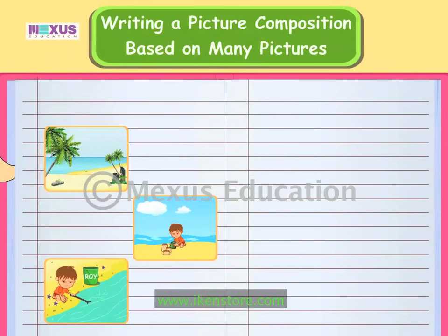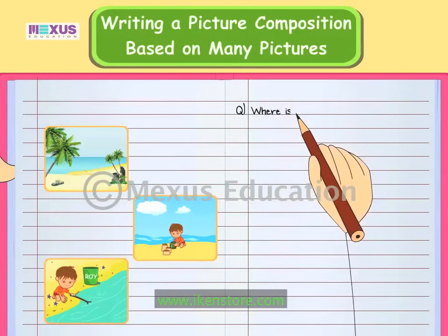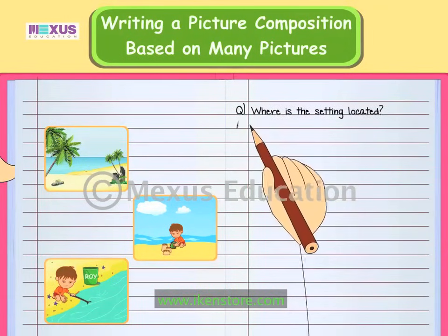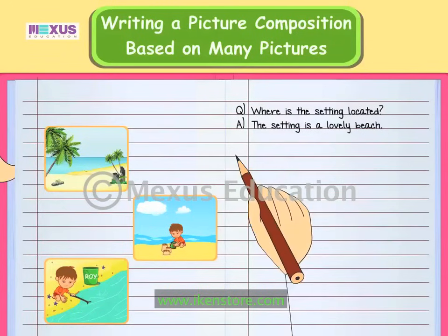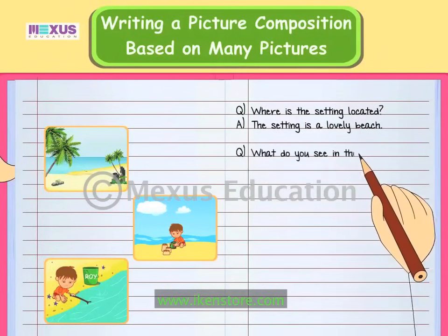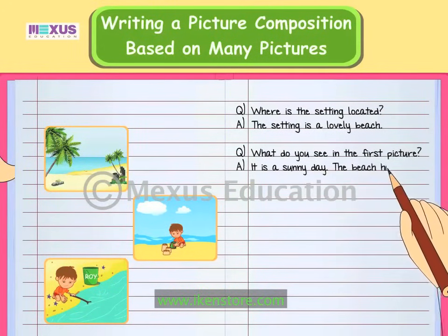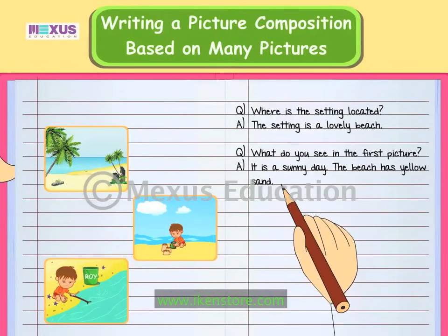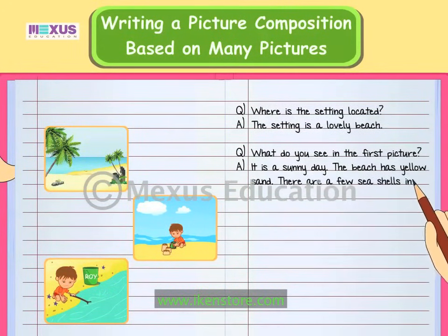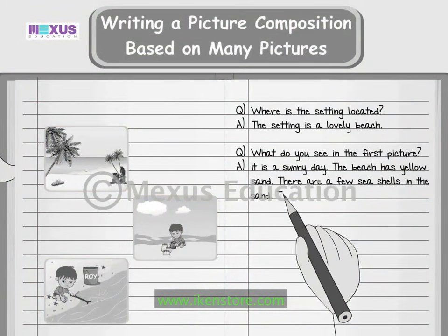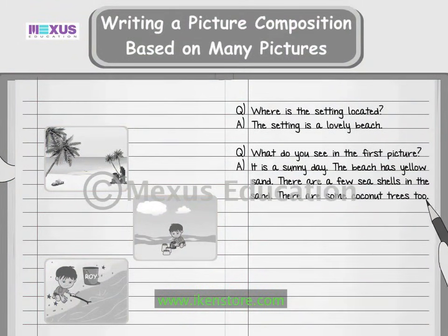Look at the pictures given here. Let us note down a few questions that come to our mind after looking at the pictures. Where is the setting located? The setting is a lovely beach. What do you see in the first picture? It is a sunny day. The beach has yellow sand. There are a few seashells in the sand. There are some coconut trees too.